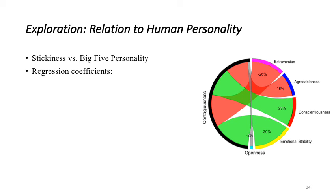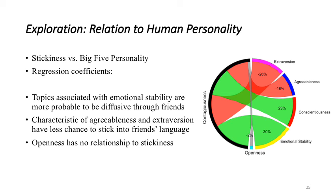Now let's move to the exploration experiments. First we are looking at the relation between stickiness and human personality. In particular the big five personality scores: openness, conscientiousness, extraversion, agreeableness, neuroticism or emotional stability. We assumed a linear regression where the dependent variable is the stickiness and the independent ones are the five personality scores. And here are their coefficients normalized. What we can see from this is that topics associated with emotional stability are more probable to spread in friends' language. Also characteristics of agreeableness and extraversion have less chance to spread over friends' language. And finally openness has no significant relation to stickiness.